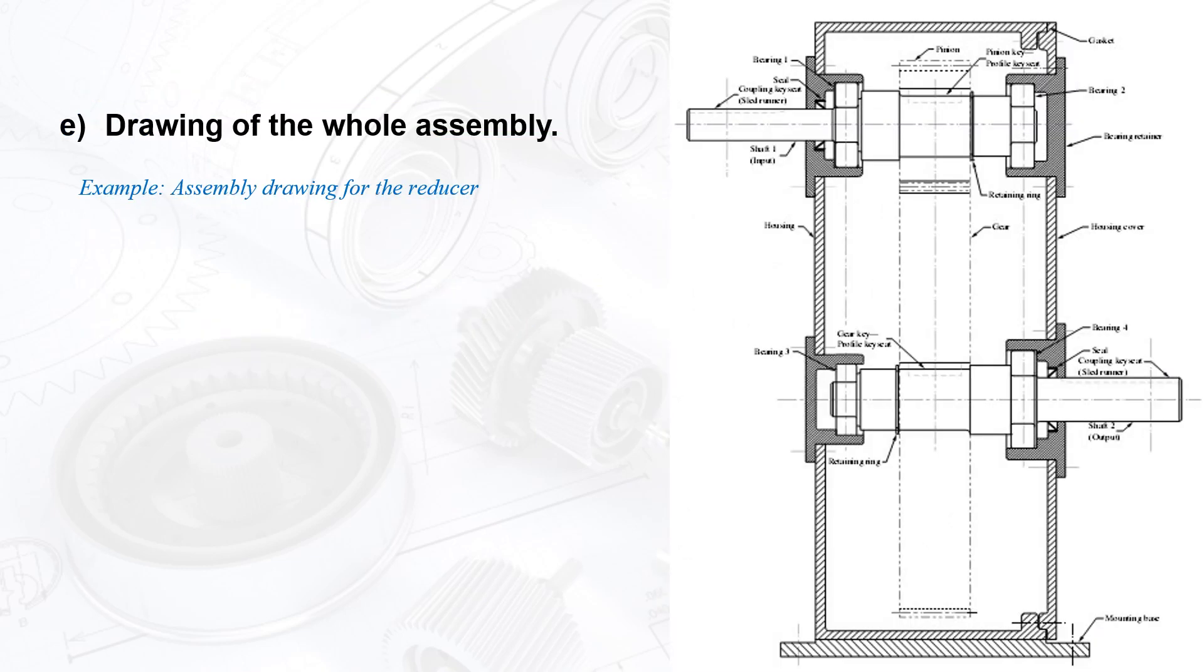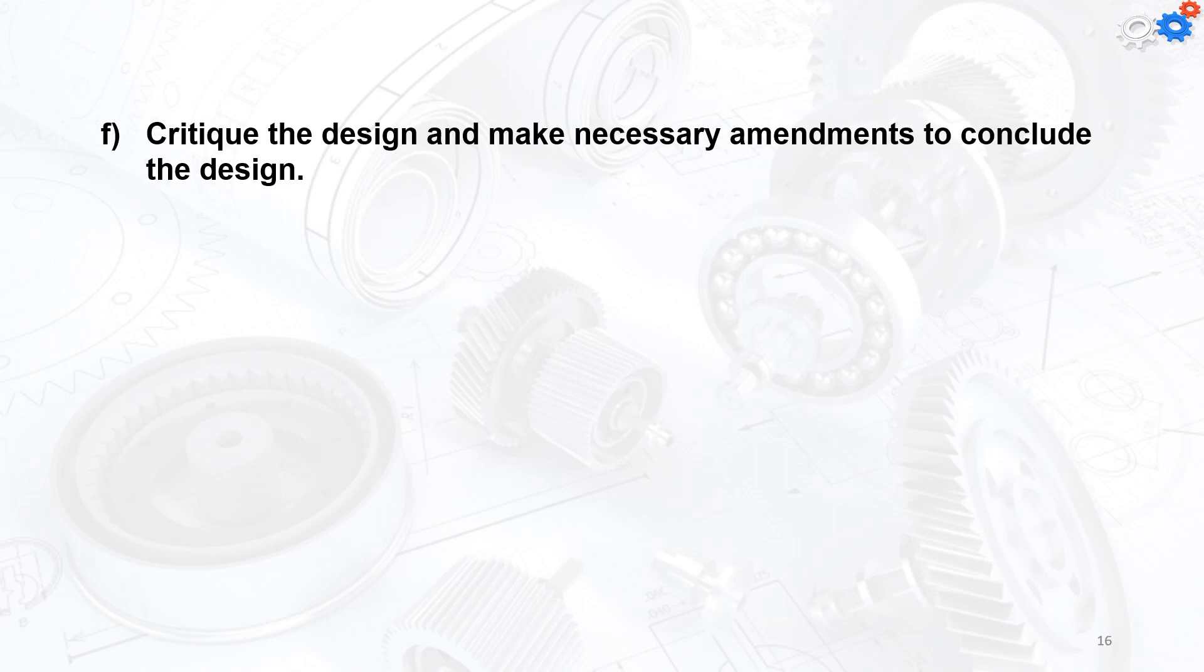The final stage is the drawing of the whole assembly. For example, the assembly drawing for the reducer can be shown in this diagram. We can have two shafts and two gears for single reduction. If you'd like to have double reduction, we're going to have three shafts and four gears. After finalizing the design, you need to critique the design and make necessary amendments to conclude.